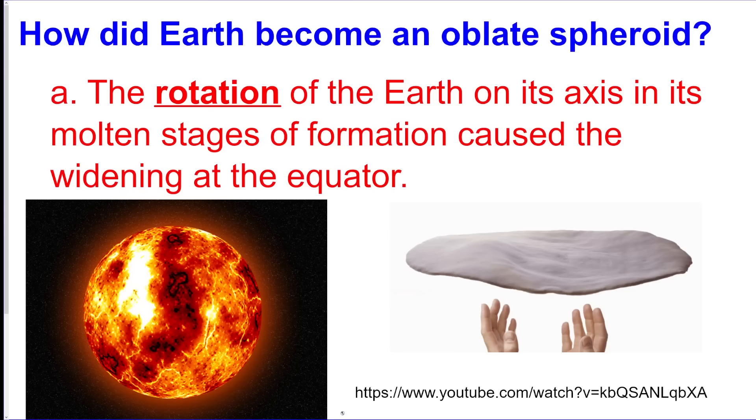The Earth became an oblate spheroid because as it rotated it sort of got wider, like making a pizza as it spun.